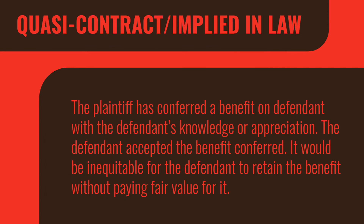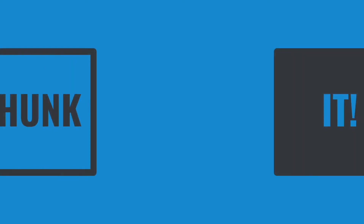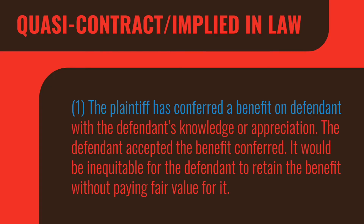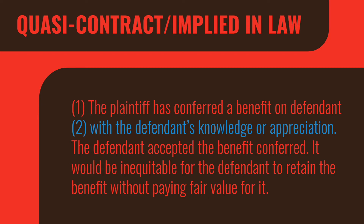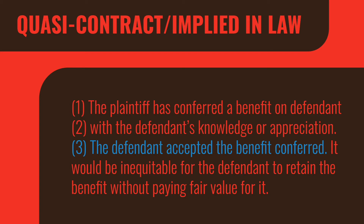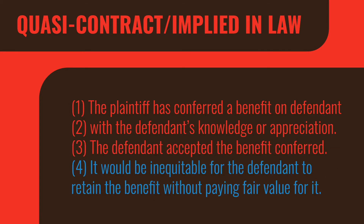Let's look first at quasi contract, or implied in law contract — same thing, different names. The rule as laid out in the Restatement says the plaintiff has conferred a benefit on the defendant with the defendant's knowledge or appreciation, the defendant accepted the benefit conferred, and it would be inequitable for the defendant to retain the benefit without paying fair value for it. Breaking it into elements: first, the plaintiff conferred a benefit on the defendant; second, the defendant had knowledge or appreciation of the benefit; third, the defendant accepted that benefit; and fourth, it would be inequitable for the defendant to retain it without paying — they would be unjustly enriched if they kept it without compensating the plaintiff.